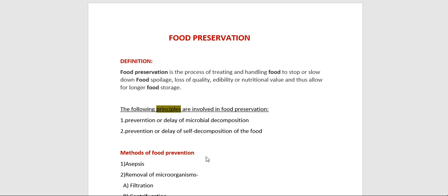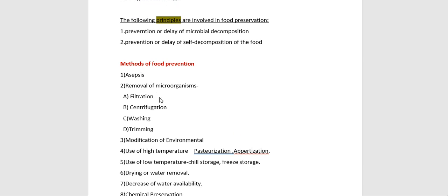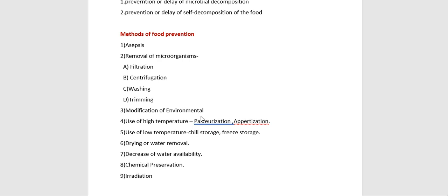Foods can be preserved by a variety of methods. The chief methods are: number one, asepsis; number two, removal of microorganisms — which can be done by filtration, centrifugation, washing, or trimming; number three, modification of the environment; number four, use of high temperatures; number five, use of low temperatures; number six, drying or water removal; number seven, decrease of water availability; number eight, chemical preservation; and number nine, radiation. We are going to discuss these nine methods of food preservation.